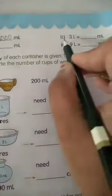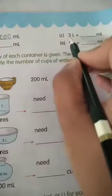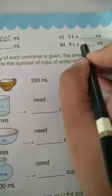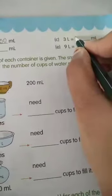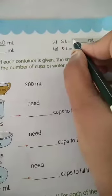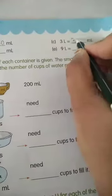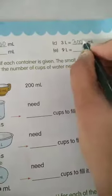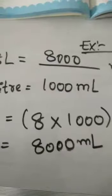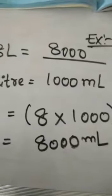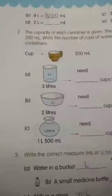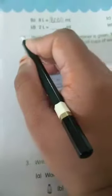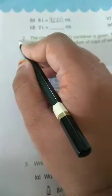Third question: 3 liters equals to dash milliliters. So 3 liters equals to 3000 milliliters. Simple and easy.